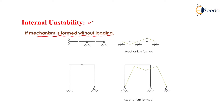How is a mechanism formed? If three consecutive hinges are present in a structure and there is no fixed support, then the structure will undergo mechanism formation and will be known as an internally unstable structure. In the first case, due to the fixed support, the structure will not undergo any type of mechanism formation, and that is why it is an internally stable structure.